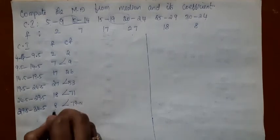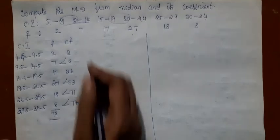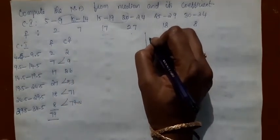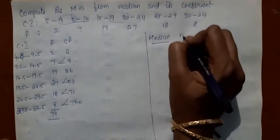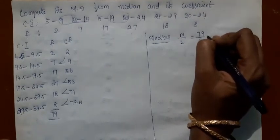So this is the value of capital N which is summation F. And then let us compute median. So to compute median, first we should find N by 2 th item. That is 79 divided by 2.